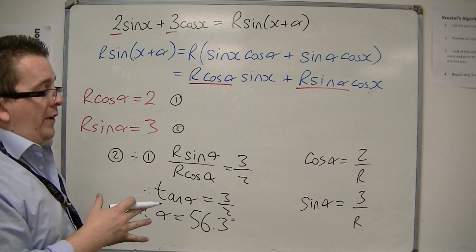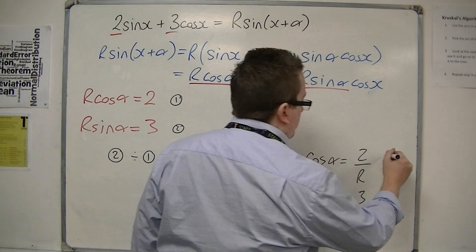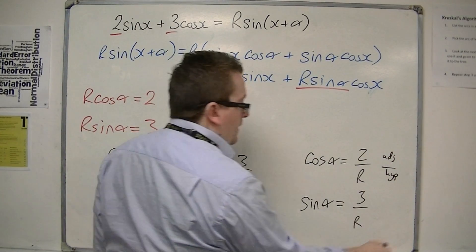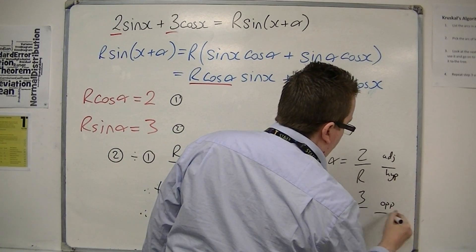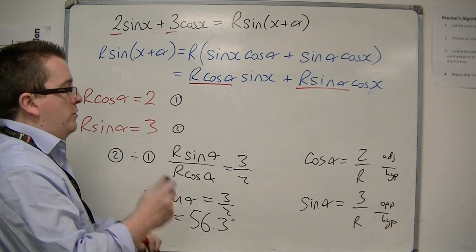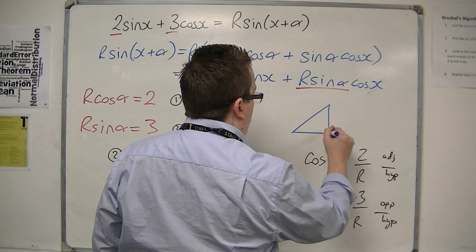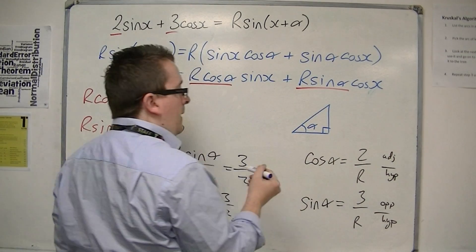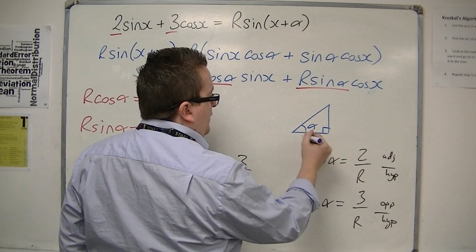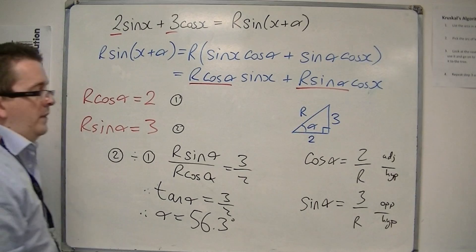Now, remember that cos α is adjacent over hypotenuse and sin α is opposite over hypotenuse. So if I draw a triangle, a right-angled triangle, where this is α, then if that's the adjacent over the hypotenuse, there's the adjacent, there's the hypotenuse. The opposite is 3.